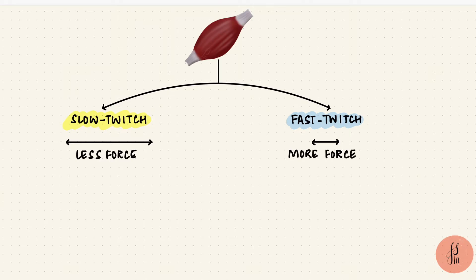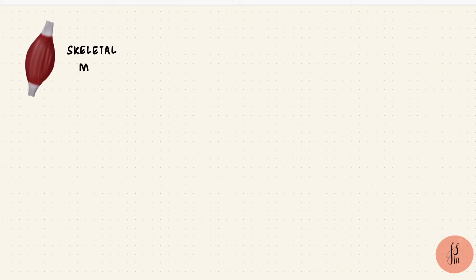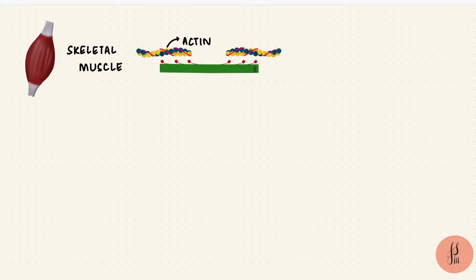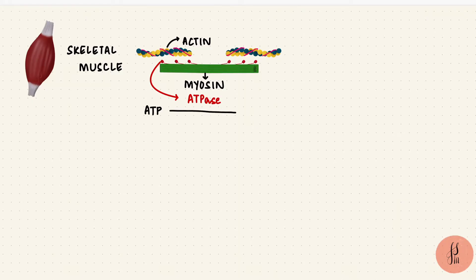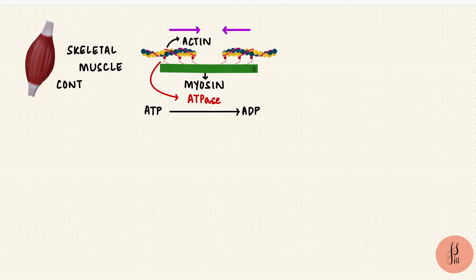Let's go back a little to see how a skeletal muscle contracts. Skeletal muscles contract using contractile proteins — that's actin and myosin — which form filaments. The heads of the myosin molecules have ATPase activity. They hydrolyze adenosine triphosphate to adenosine diphosphate, and the energy is used to bend the myosin heads at the hinge region, dragging the actin filaments along with them inwards. This results in a muscle contraction.